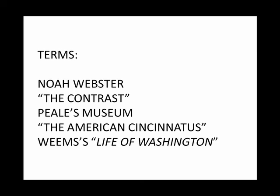And then Weems' Life of Washington — this was a biography of George Washington that came out in 1800. Washington had died in 1799, so that's a very quick job. And it was very, very successful, going through 11 editions in 11 years.